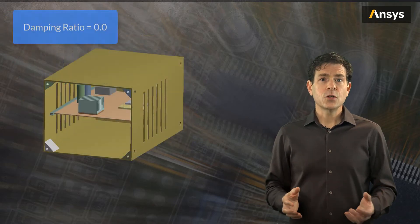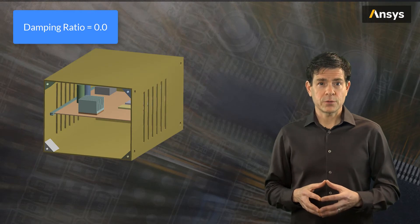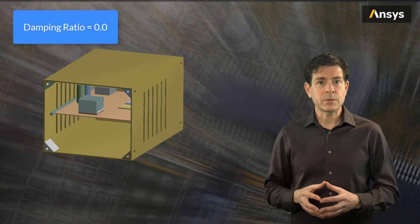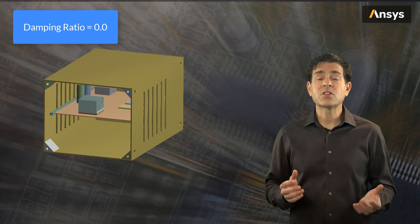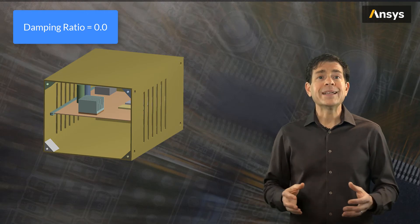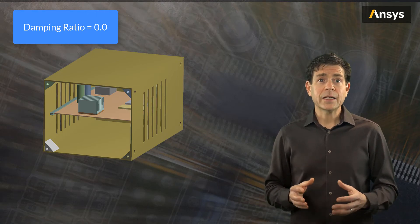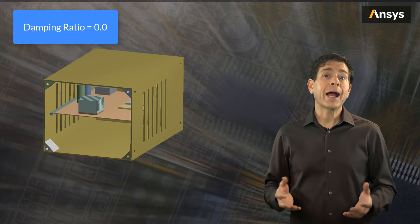In the first case, we set the damping ratio to 0. Now, such a case is extreme as all structures at least have some amount of damping. But it does help to make the point, in contrast, having some higher damping values.